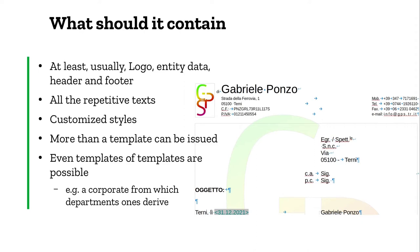You can prepare customized styles so that you don't have to waste time formatting text every time — you may have styles already prepared to do this. Also, more than one template can be issued. Especially big companies or entities may have different departments, so it could be useful to have different templates per department. It is also possible to have templates from templates, meaning you may have a general template with the company name and stationary data in the header and footer, and then create department-specific templates from that.